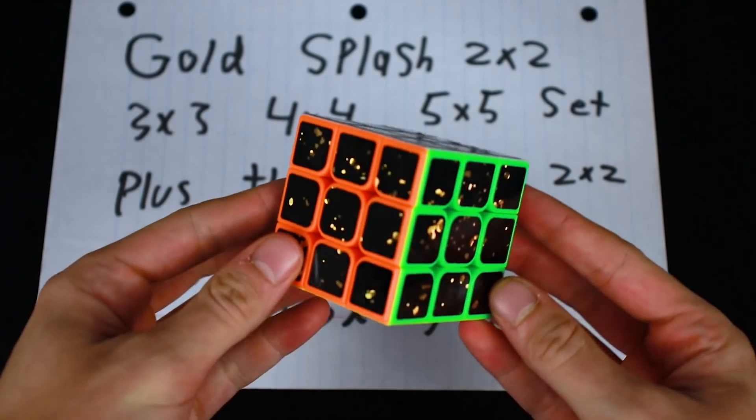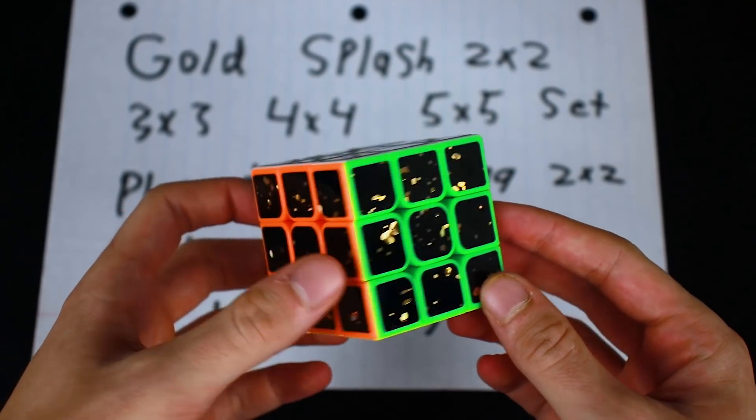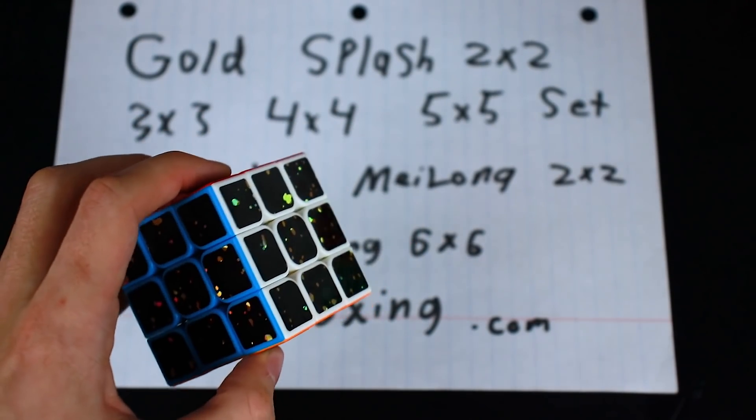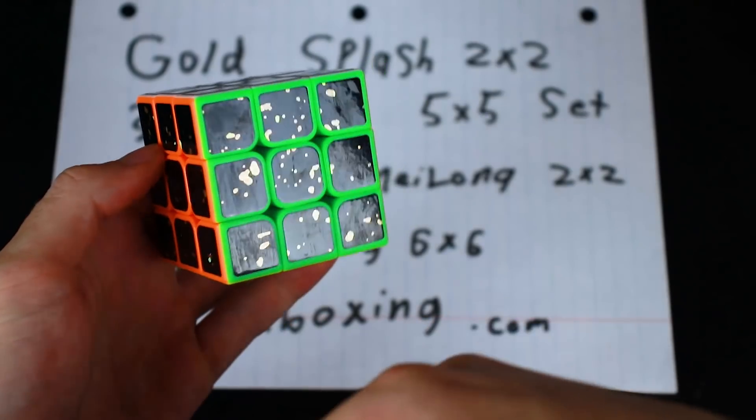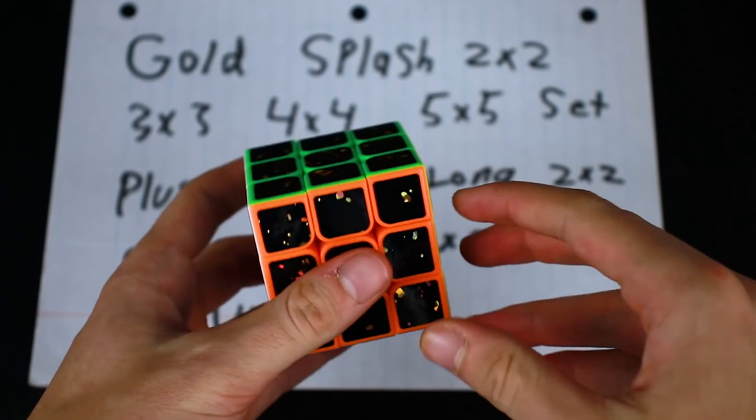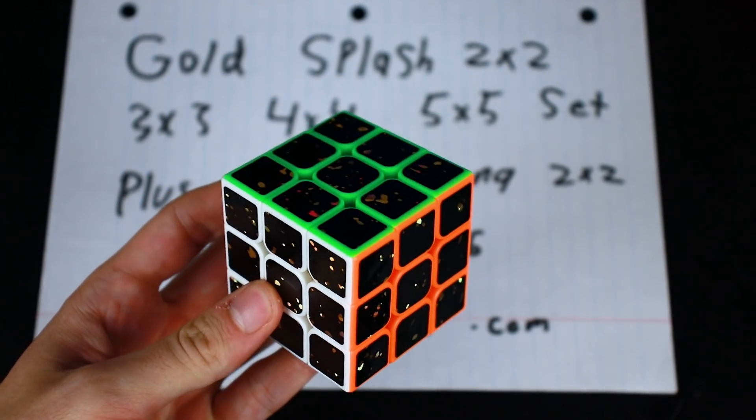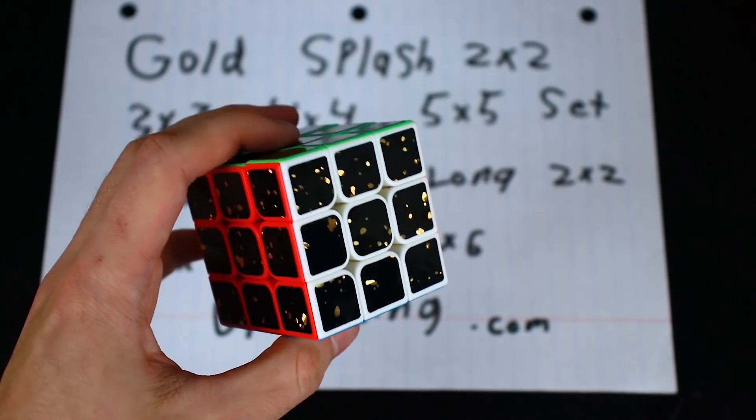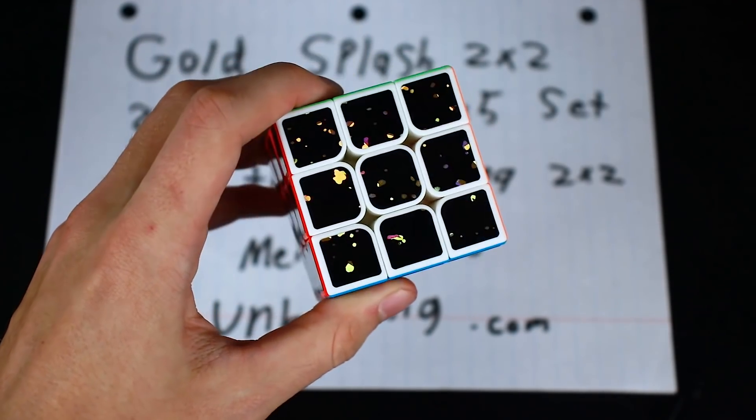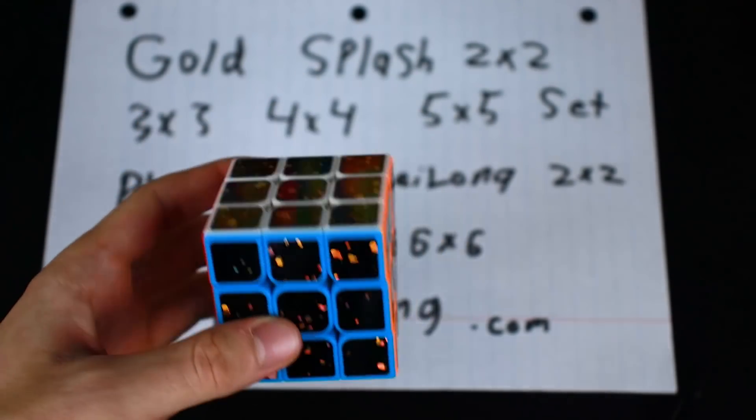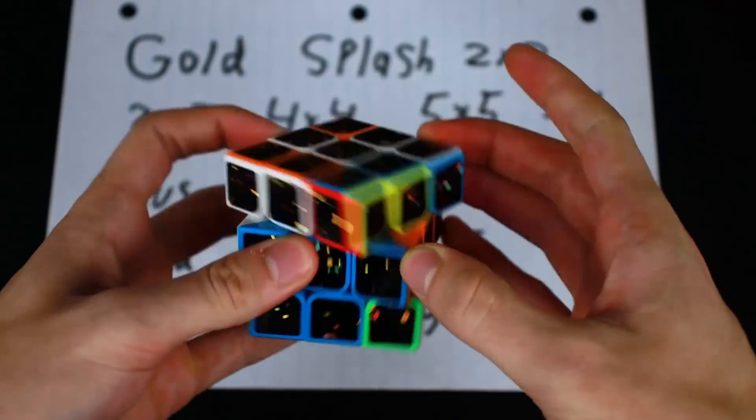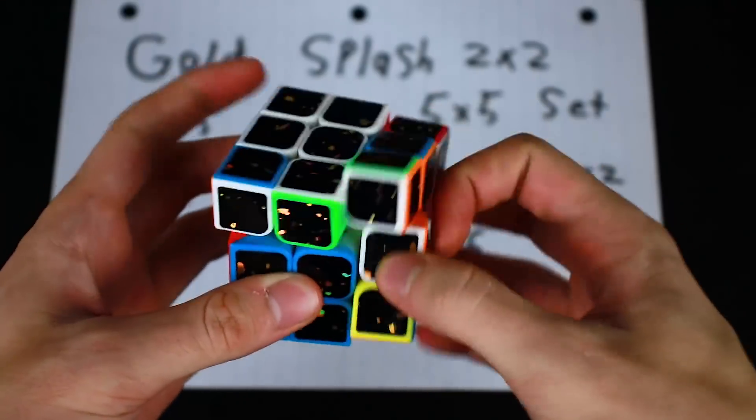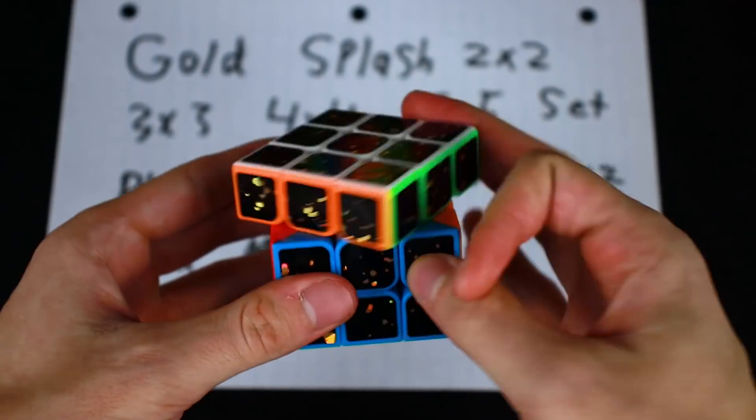We'll start with the 3x3. So basically what makes this special is it's like the carbon fiber cubes where it's a stickerless cube with a bunch of black stickers over it. Only instead of awesome carbon fiber, it has these kind of gold splash splotches all over it and these gold splotches are actually shiny. So that's cool. It's not just like a yellow sticker there. It actually has kind of a metallic look. Let's do some turns.